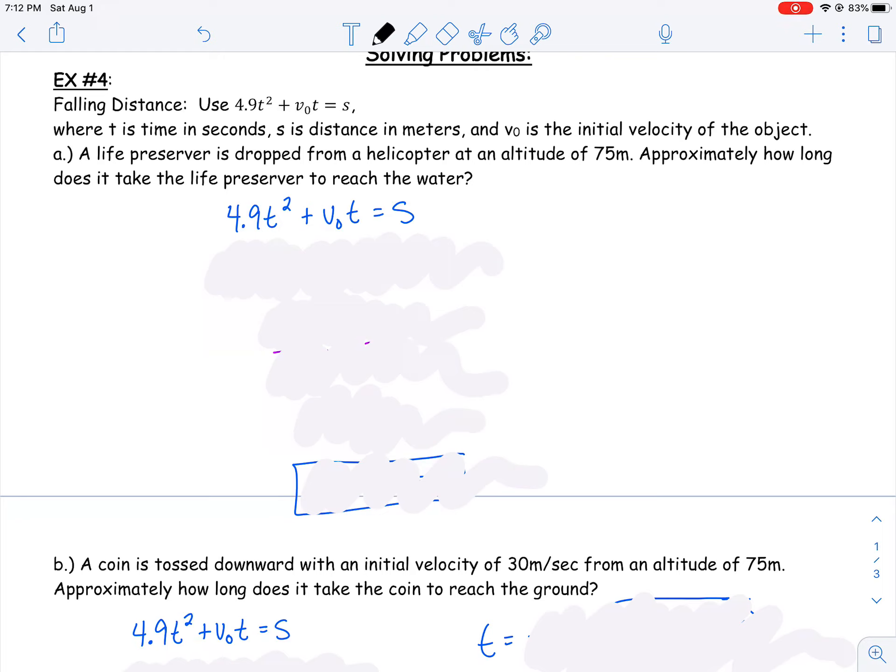So if we have an object falling, we have acceleration due to gravity, and we can use the formula 4.9t² plus v₀t equals s, where t is the time in seconds, s is distance in meters, and v₀ is your initial velocity.